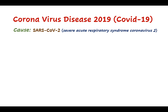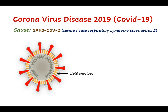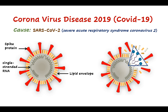SARS-CoV-2 is the cause of COVID-19. Like other coronaviruses, it has a lipid envelope, a single-stranded RNA genome, and club-shaped spike proteins that project from the surface. The lipid envelope is a weak point in the virus, and soap destroys the virus when the water-shunning tails of the soap molecules insert themselves into the lipid envelope and break it open. That is why we recommend people to wash their hands with soap.